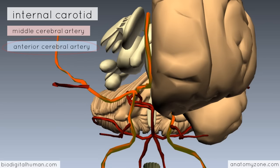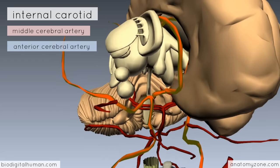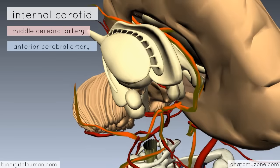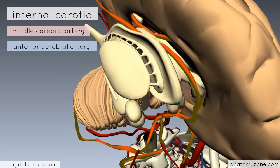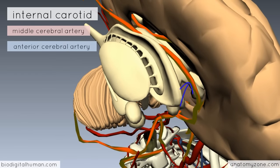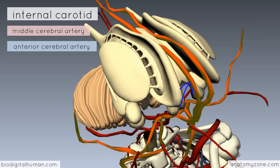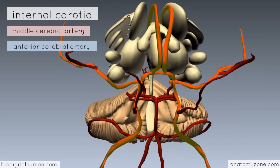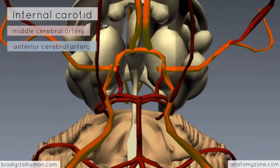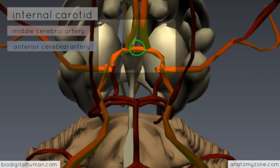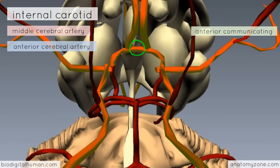With the right hemisphere removed and rotating the model, you can see the anterior cerebral artery running along in this interhemispheric fissure. Bringing the model back to the inferior view, you can see there is a small connection between the anterior cerebral arteries called the anterior communicating artery — a very short artery which connects the two together.